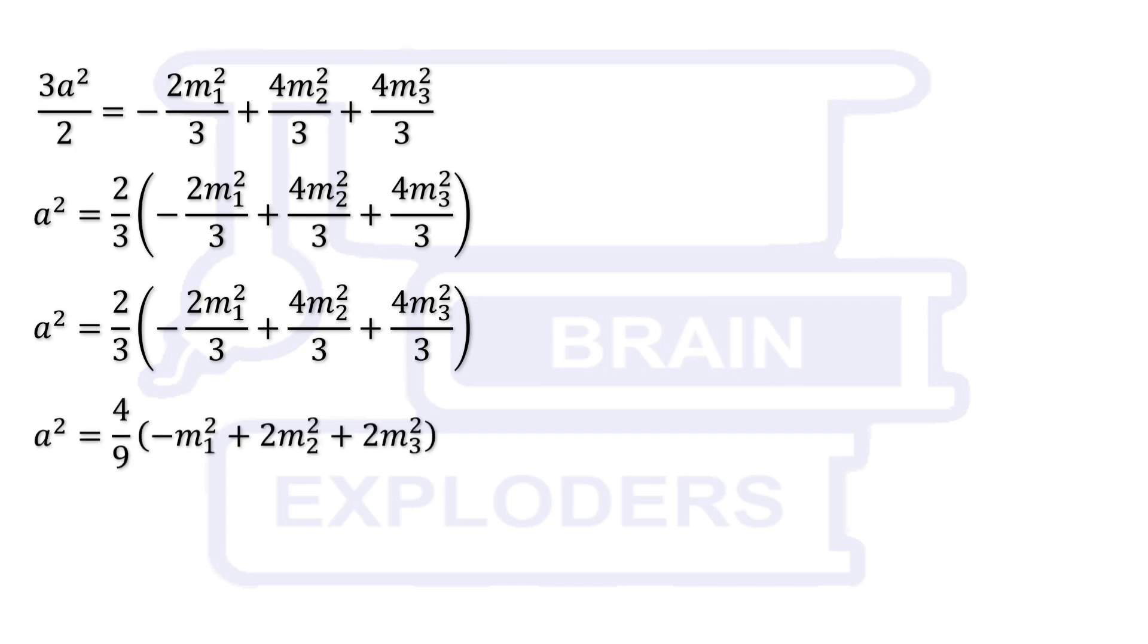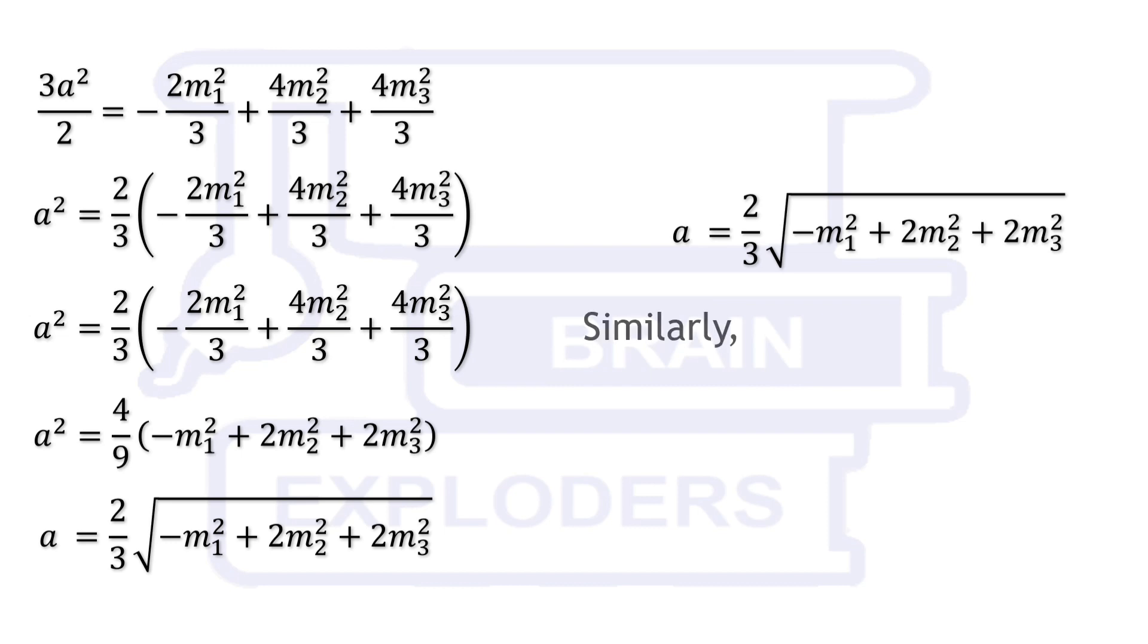Taking 2 by 3 outside the bracket and taking square root both sides, we find that A is equal to 2 by 3 times square root of minus M1 squared plus 2M2 squared plus 2M3 squared. Similarly the value of B and C can also be written in terms of medians by interchanging the coefficients.